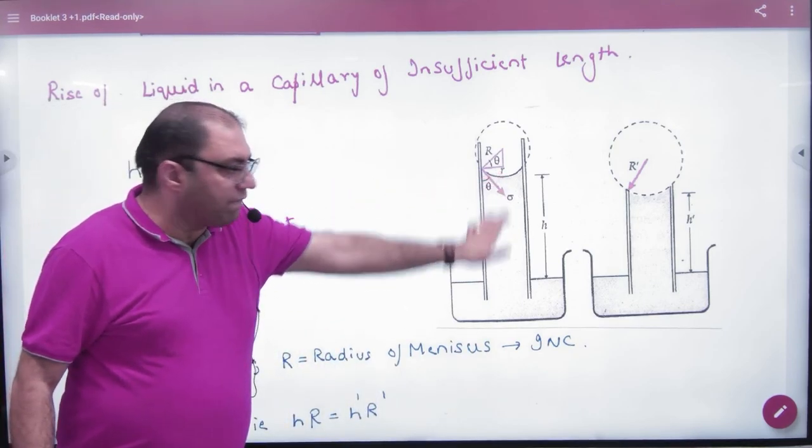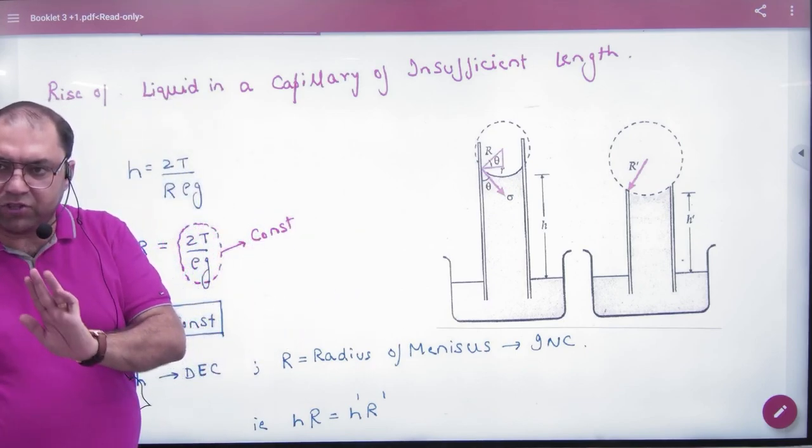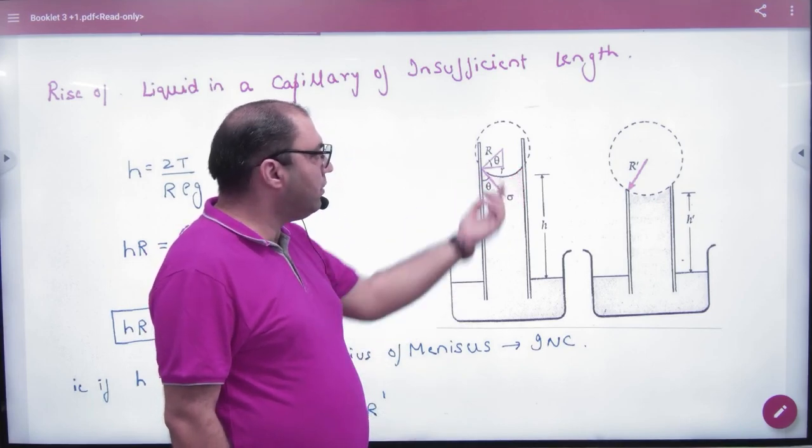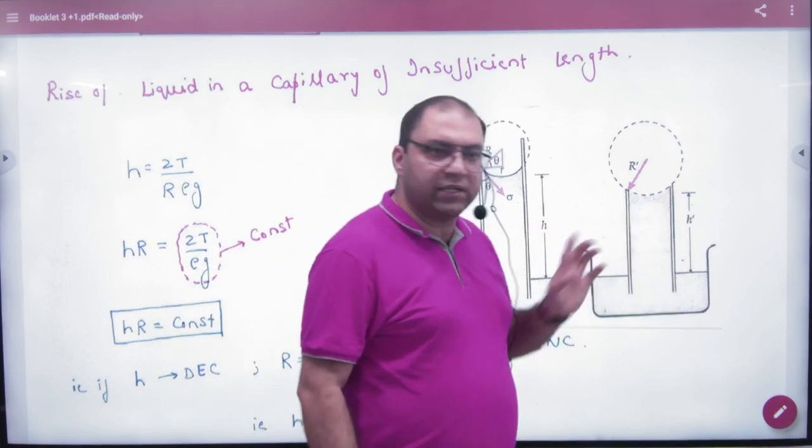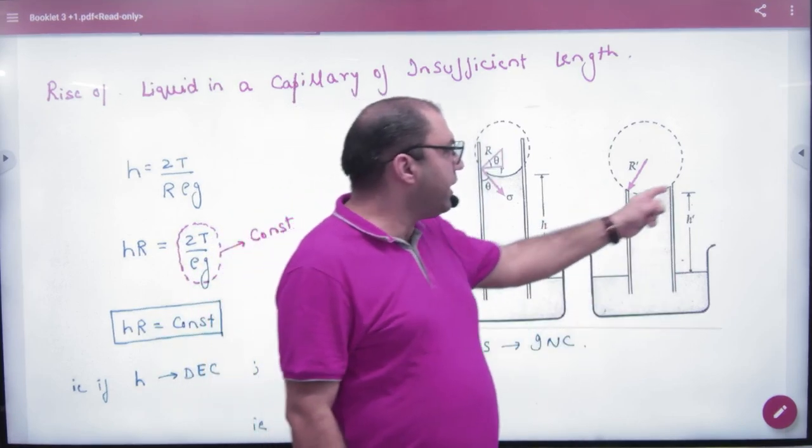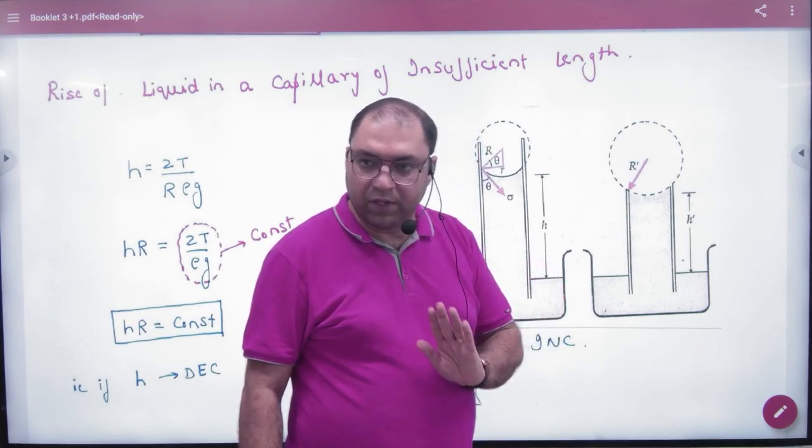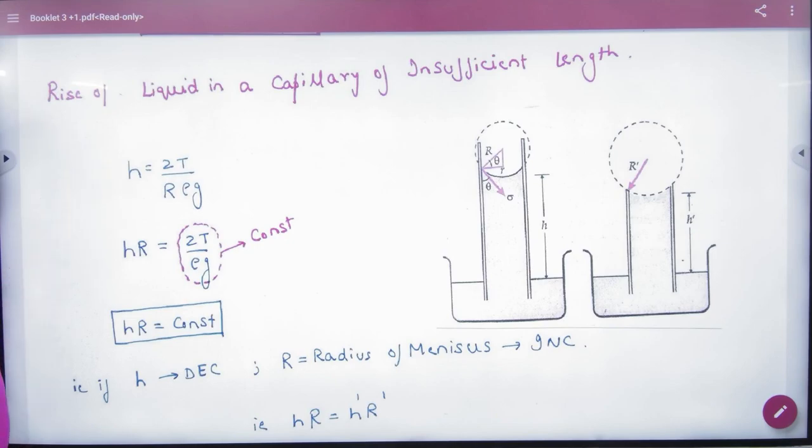This is sufficient length height h. When the capillary height h is sufficient, then the water has stopped here, making a meniscus of radius R. But insufficient length h dash, then the liquid has changed the radius. How much? R dash. Now according to this formula, h is equal to 2T by R rho g. R is here. H into R is this term.